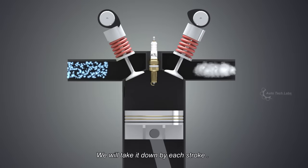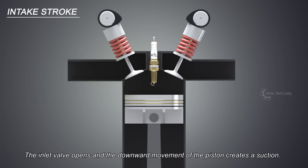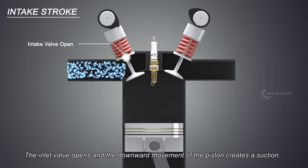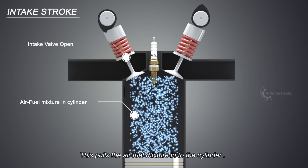We will take it down by each stroke. The intake stroke. The inlet valve opens and the downward movement of the piston creates a suction. This pulls the air fuel mixture into the cylinder.